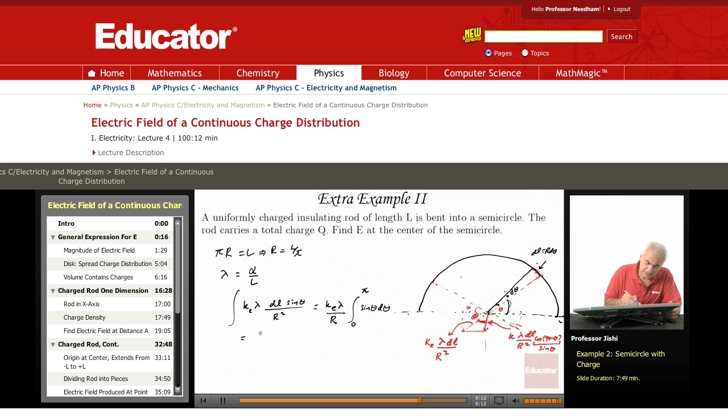This is just k_e lambda over r, integral of sine is minus cosine from zero to pi. Equals k_e lambda over r. Minus cosine pi, cosine pi is minus one times minus, that's one, minus minus, that's plus cosine zero, one plus one, so it's two. k_e which is one over four pi epsilon zero, so two lambda by four pi epsilon zero r. This is the electric field of this semicircle.